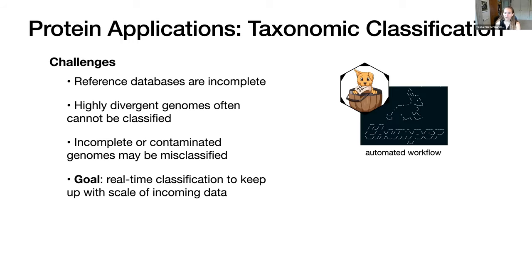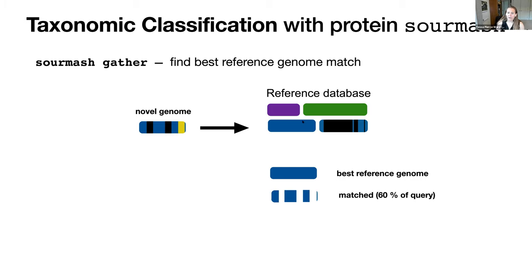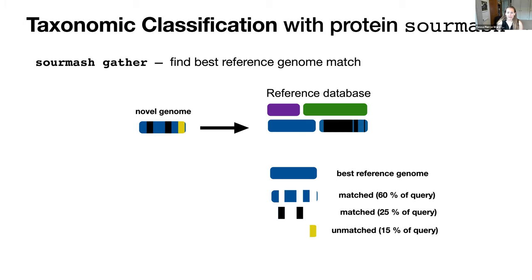We've built a Snakemake workflow on top of SourMash that allows us to string a few commands together to do this. Our first step is to use SourMash gather, which is a greedy min-set-cover algorithm, to find the best genome match. We have a novel genome with some strain variation, and we can pick out the best reference genome here in blue. We're able to get 60% match to the blue genome and find an additional 25% match to the other one, with some portion unmatched.